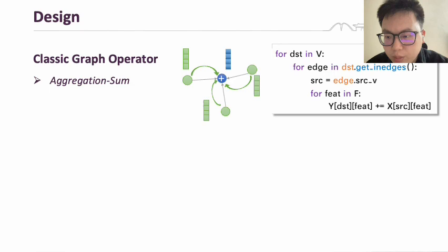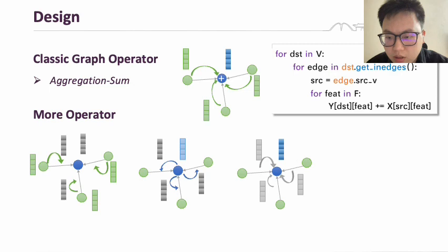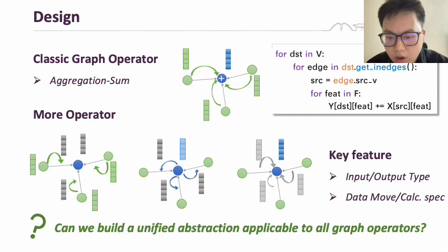However, we face a new challenge: dealing with too many different graph operators in GNNs. These operators can have different inputs, outputs, data access and movement, as well as different computational operations. Therefore, a question arises: do we need to independently code for each operator, or can we build a unified abstraction that applies to all graph operators?